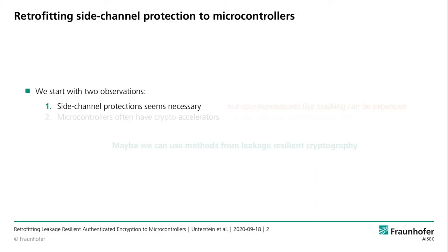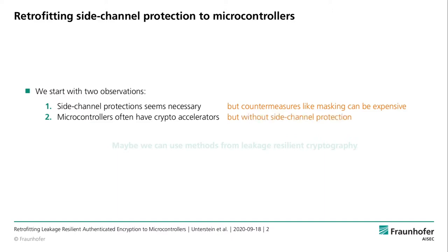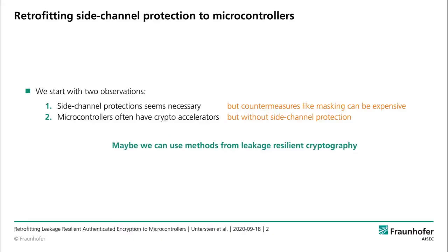We start this work with two observations. First, that side channel protection seems absolutely necessary as shown in the example, but countermeasures like masking can be very expensive to implement and cost a lot of latency. Second, microcontrollers often come with crypto accelerators that they use for performance reasons, but unfortunately they almost never provide side channel protection. So our idea was that maybe we can use methods from leakage resilient cryptography to harden such microcontrollers and still make use of those crypto accelerators.